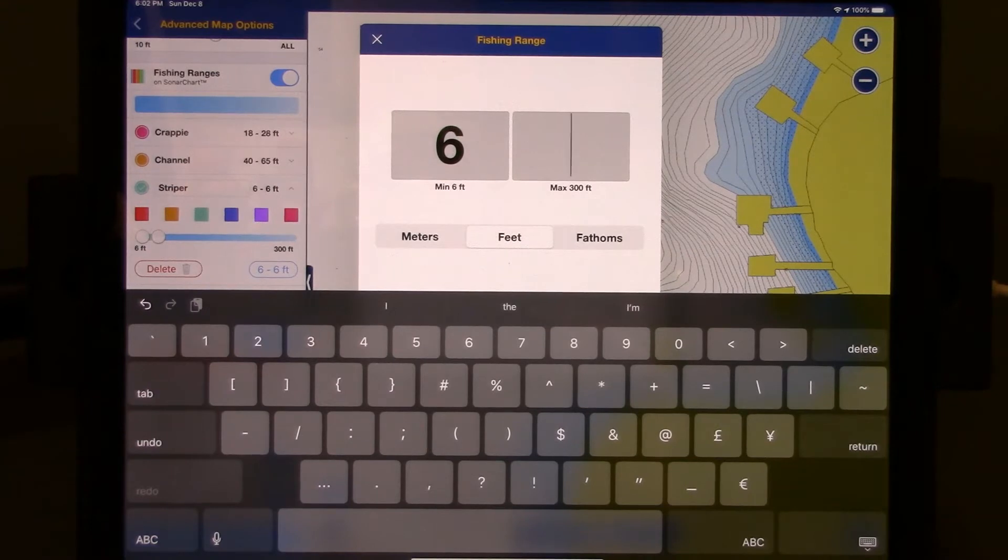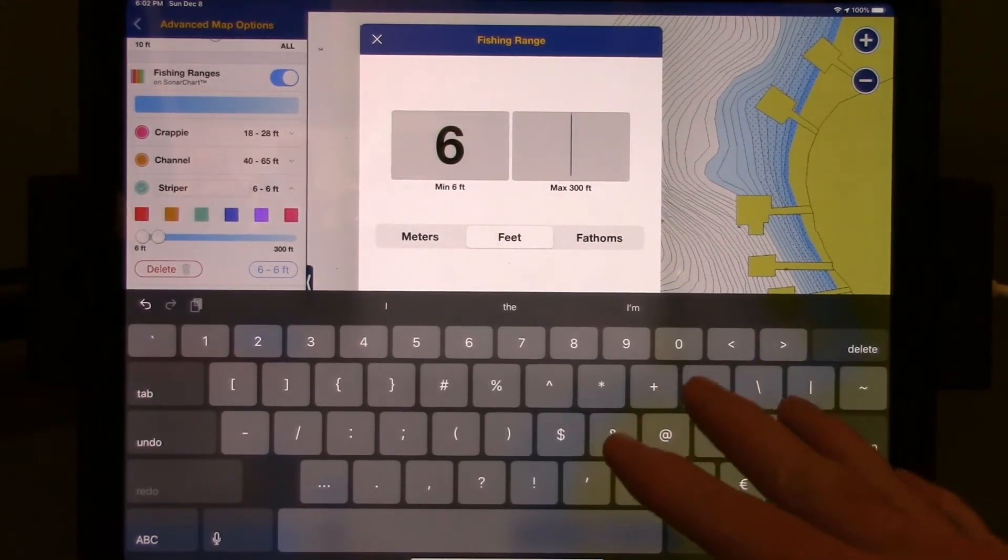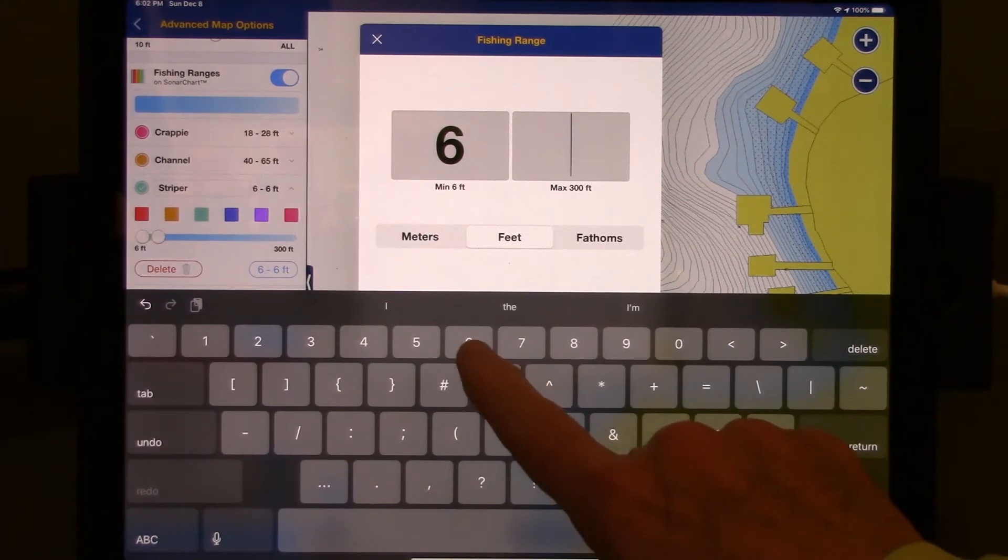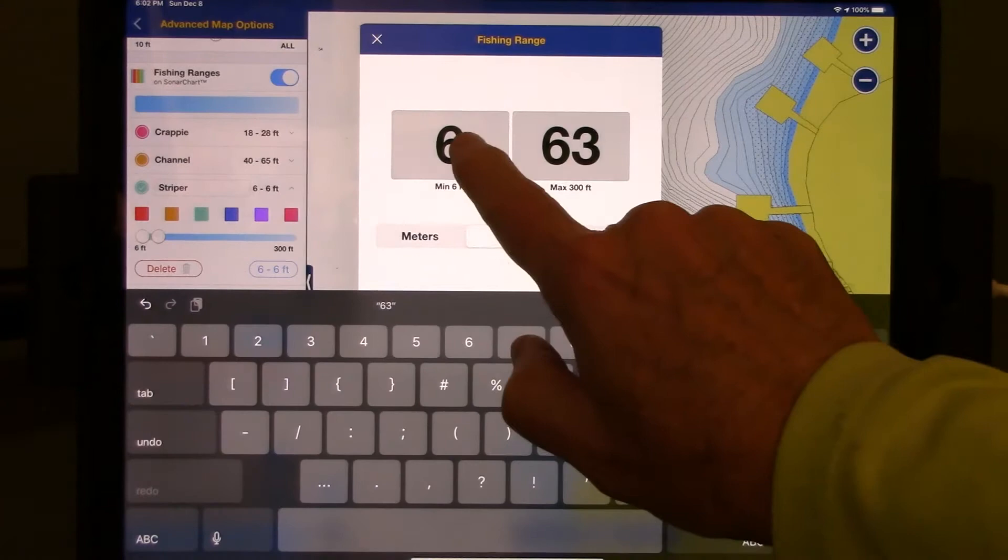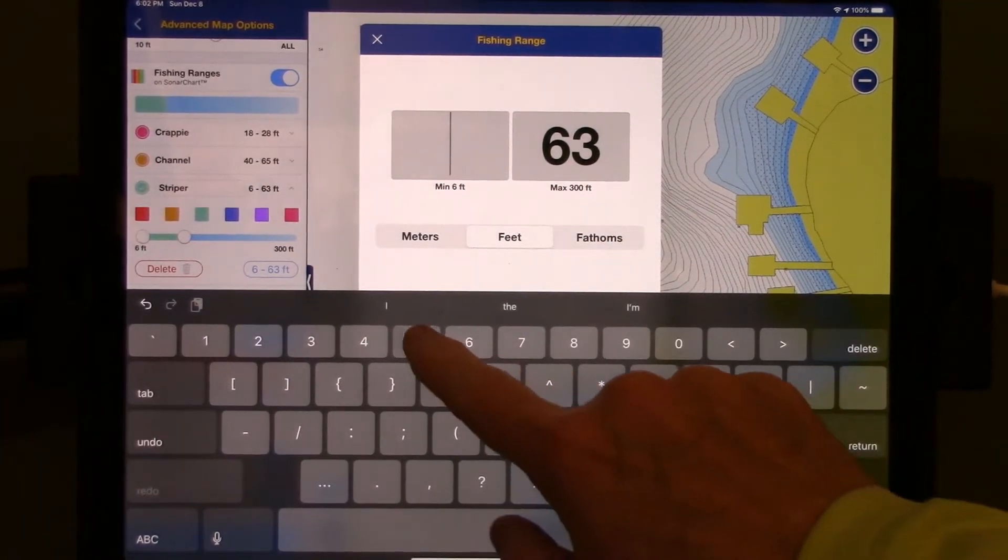Well, I'm going to guess that the fish don't exactly have a measuring tape. So what I'm going to do just to make it a little bit easier to spot this on my map, I'm going to say anywhere from 63 feet down to 57 feet.